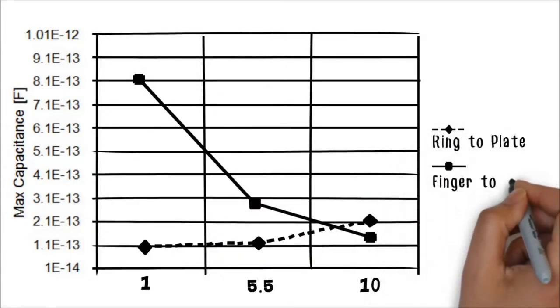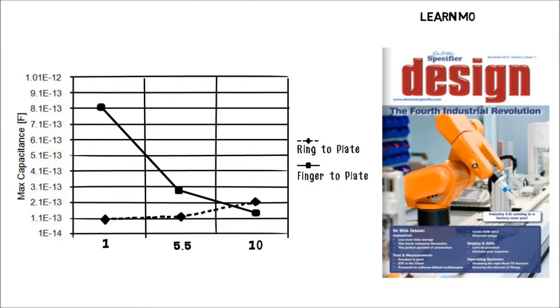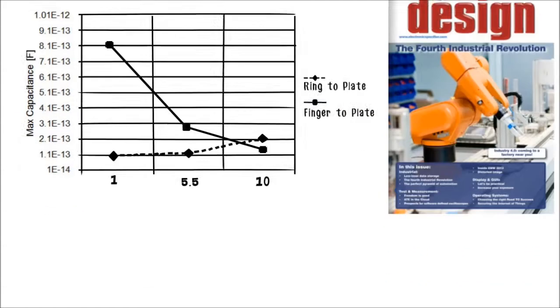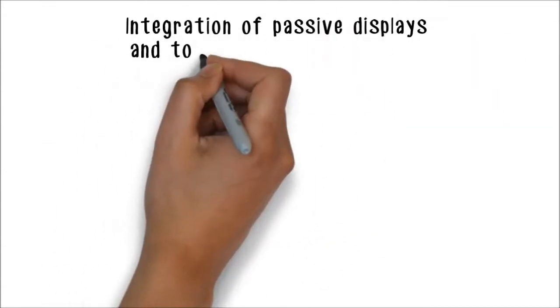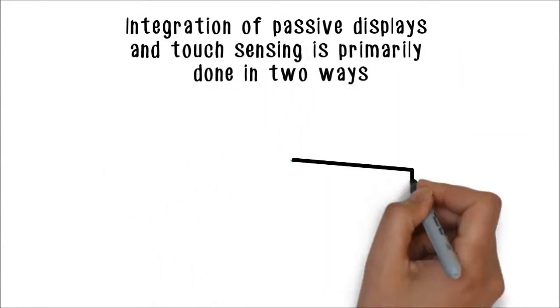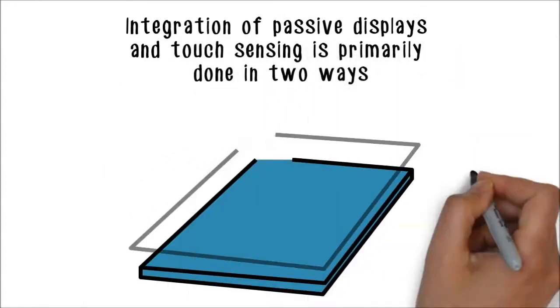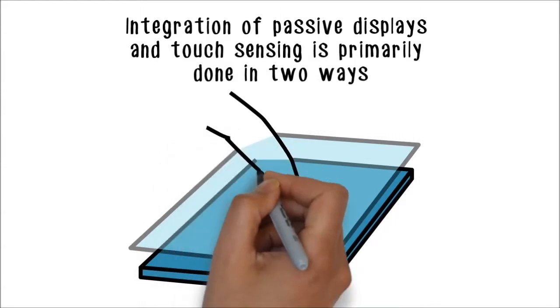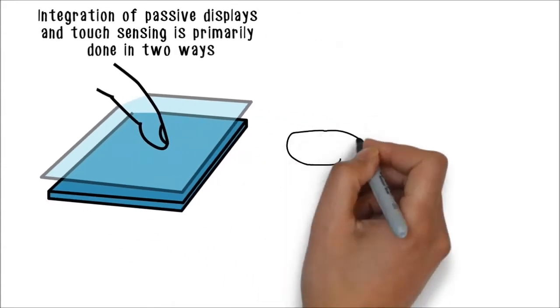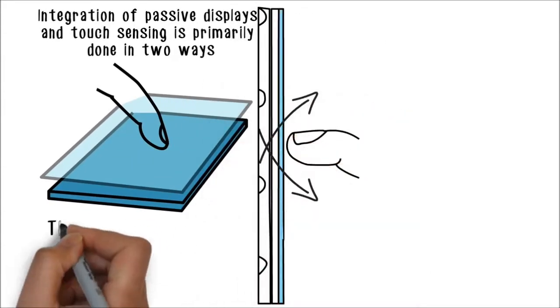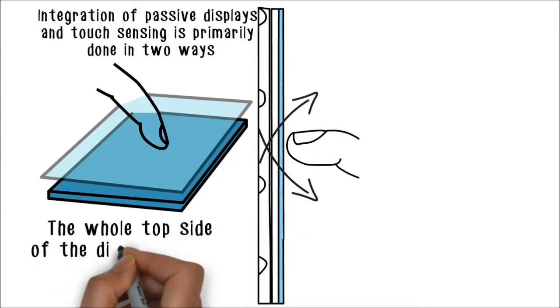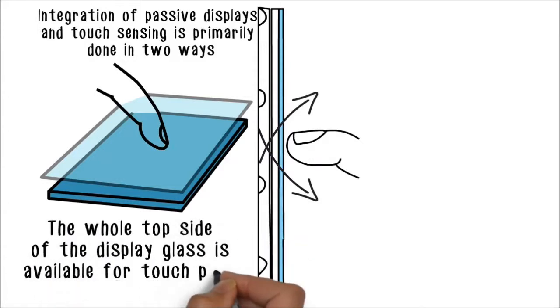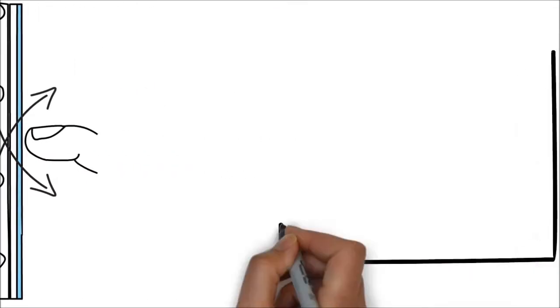Integration of passive displays and touch sensing is primarily done in two ways. In an on-cell implementation, the touch pads are deposited on the display front glass and sandwiched between the top polarizer and the display glass. The whole top side of the display glass is available for touch pads and routing. Sensor channels can be multiplexed for advanced functions.